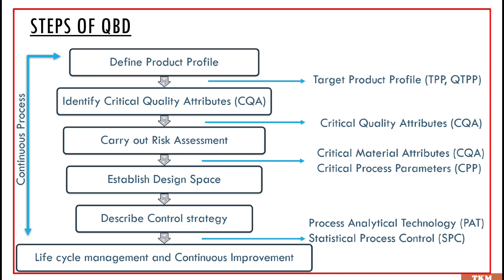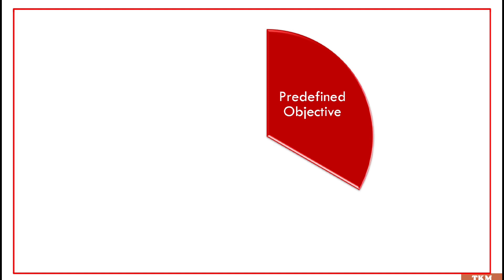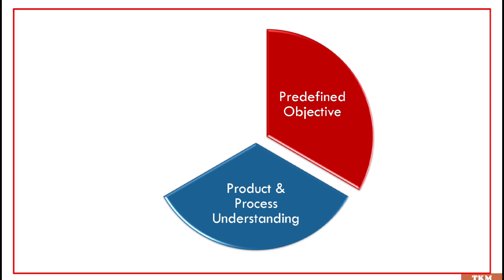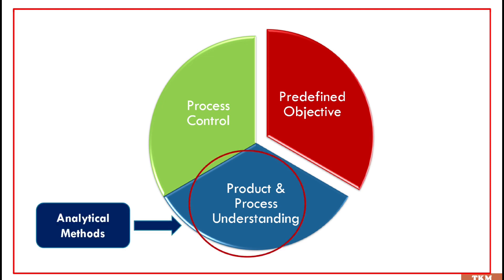These six steps you have to keep in mind if you want to understand QBD in more detail. In the next video, I will cover the different stages of QBD in detail. Now, QBD begins with predefined objectives and emphasizes on product and process understanding and process control. In order to initiate a successful QBD program, the first step is to identify those process parameters that are essential to product quality and develop well-validated analytical methods to monitor those parameters.